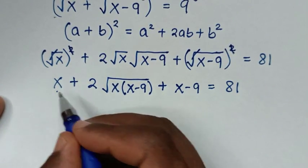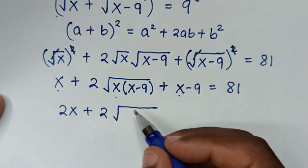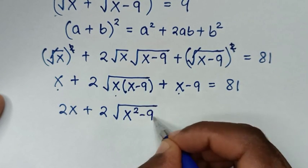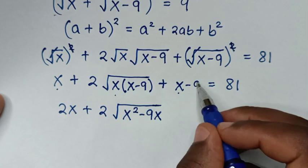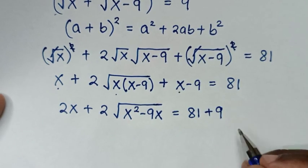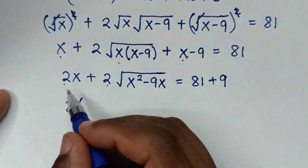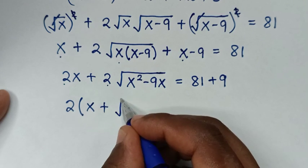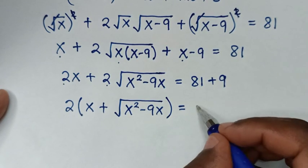In the next step, x plus x gives 2x. We expand inside the square root: x times x is x², x times −9 is −9x. Moving −9 to the right side gives +9, so we have 2x + 2√(x²−9x) = 81 + 9 = 90. Taking 2 as a common factor: 2(x + √(x²−9x)) = 90.